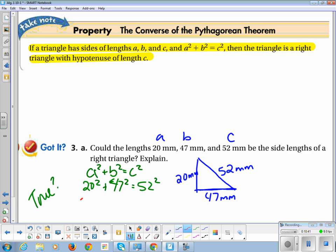20 squared is 400. 47 squared is calculating, calculating, 2209. 52 squared is 2704. And we're going to see if these two guys are equal. So is 2209 plus 400 equal to 2704?